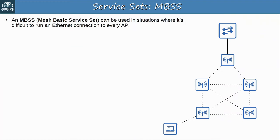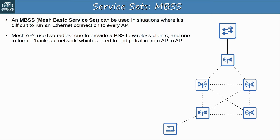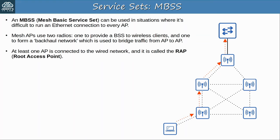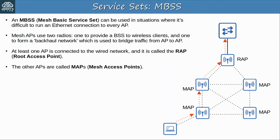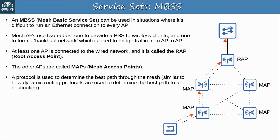The final kind of service set is an MBSS, Mesh Basic Service Set, which can be used in situations where it's difficult to run an Ethernet connection to every AP. The mesh APs use two radios: one to provide a BSS to wireless clients so they can connect to the network, and one radio to form the mesh backhaul network bridging traffic from AP to AP. At least one AP is connected to the wired network and is called the RAP, root access point. The other APs are called MAPs, Mesh Access Points. A protocol is used to determine the best path that traffic should take through the mesh.